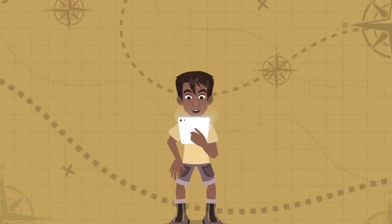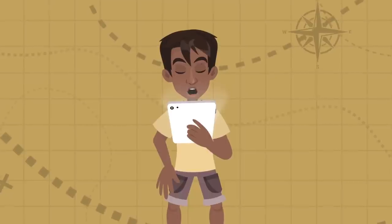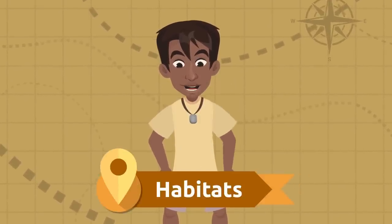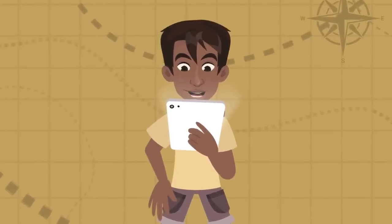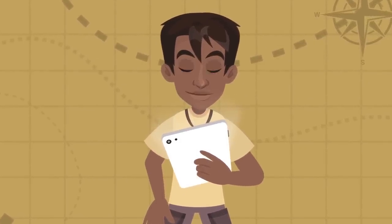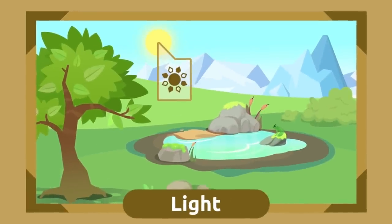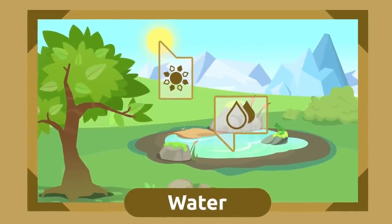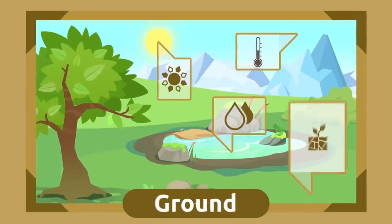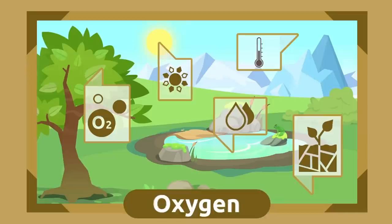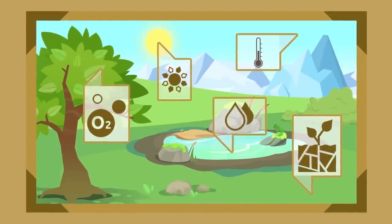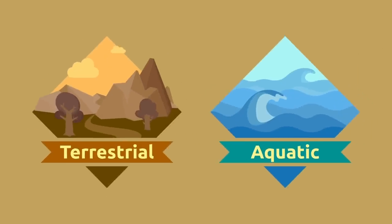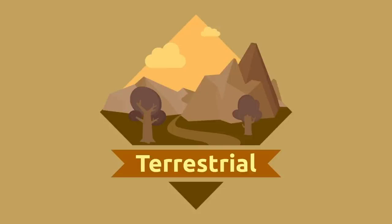Hello friends! Today we're going to discover the places where living beings live — these places are known as habitats. A habitat is a place that has the necessary resources so that living beings can survive: light, water, temperature, ground, and oxygen. Depending on what these resources are, we can find very different habitats. There are two types of natural habitats: terrestrial and aquatic. Today we're going to travel to the terrestrial habitats.